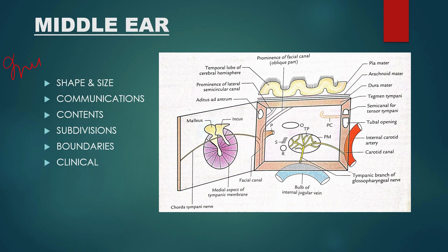Next, we have the medial layer — an important short note. Topics include shape and size, communications, contents, subdivisions, boundaries, and clinical features, along with a diagram. A long note can never arise from the medial layer, so prepare your answer according to the marks. Give these important points and write two to three lines regarding each. That is more than enough.